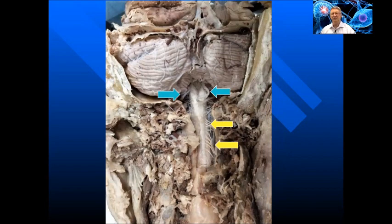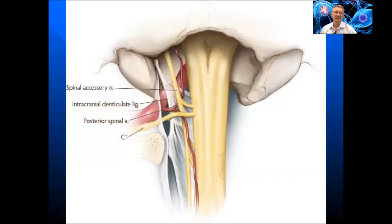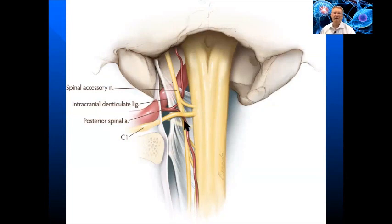So when we see misalignment of a vertebra or alteration of spinal curves, this can produce abnormal mechanical tension on the cord. It may cause deformation of the dentate ligaments, interfering with the propagation of cerebrospinal fluid. Here we can see very nicely an intracranial dentate ligament and the relationship between the spinal accessory nerve and C1 nerve — demonstrating how misalignment of the atlas or first cervical vertebra may adversely affect cranial nerve function as well as spinal nerve function.